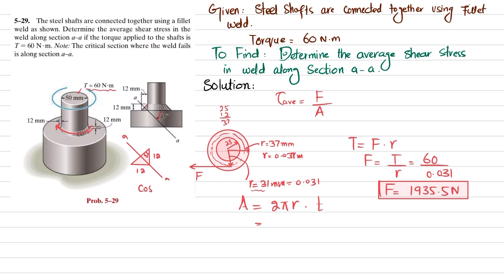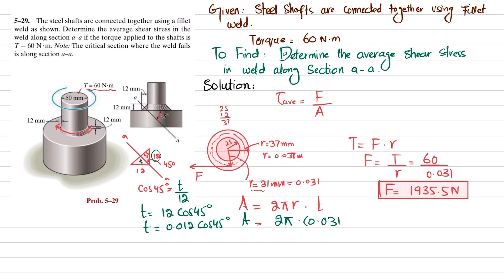Since this is a right-angle triangle, both angles are 45 degrees. Taking cos(45°) gives us the thickness t divided by the hypotenuse of 12, so t equals 12 times cos(45°). In meters that is 0.012 times cos(45°). The area becomes 2π times r = 0.031 times thickness = 0.012 times cos(45°).